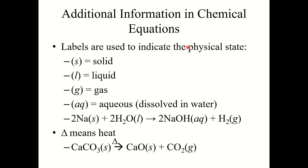You may have noticed we are using labels to indicate the physical state. We've talked about solid (s), liquid (l), and gas (g). One more label to mention is (aq), which means aqueous — dissolved in water. For example, NaOH(aq) means some amount of sodium hydroxide dissolved in water, so it gets (aq), not (l). You may also notice the delta sign — a small triangle written above the arrow — which means heat is applied to the reaction.